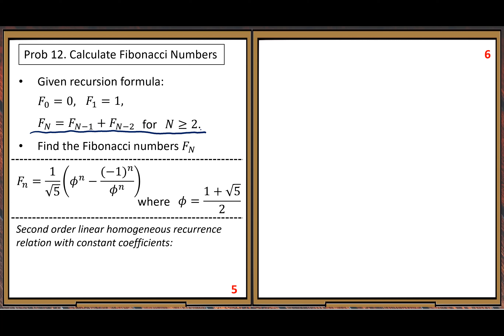This type of equation is called: second-order, linear, homogeneous, recurrence relation with constant coefficients. Each part of the name addresses some property of this equation. First, second order - not first order. For the first order, if we recall the Tower of Hanoi problem, that problem is simpler than this Fibonacci number problem.